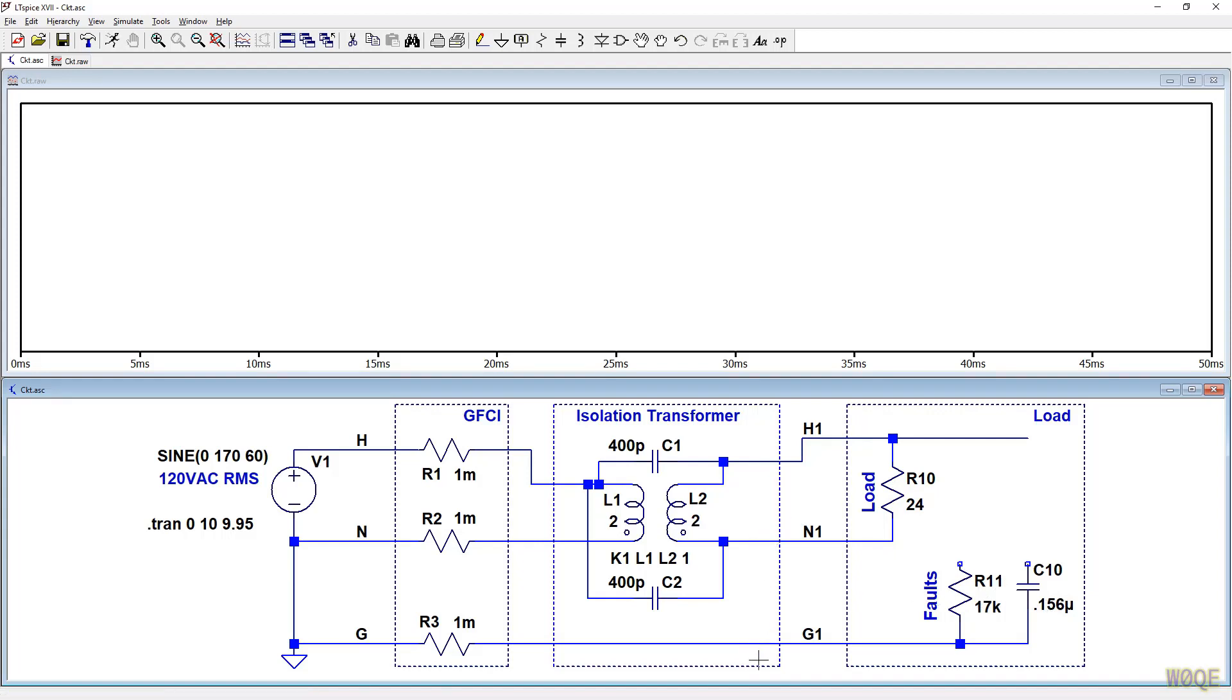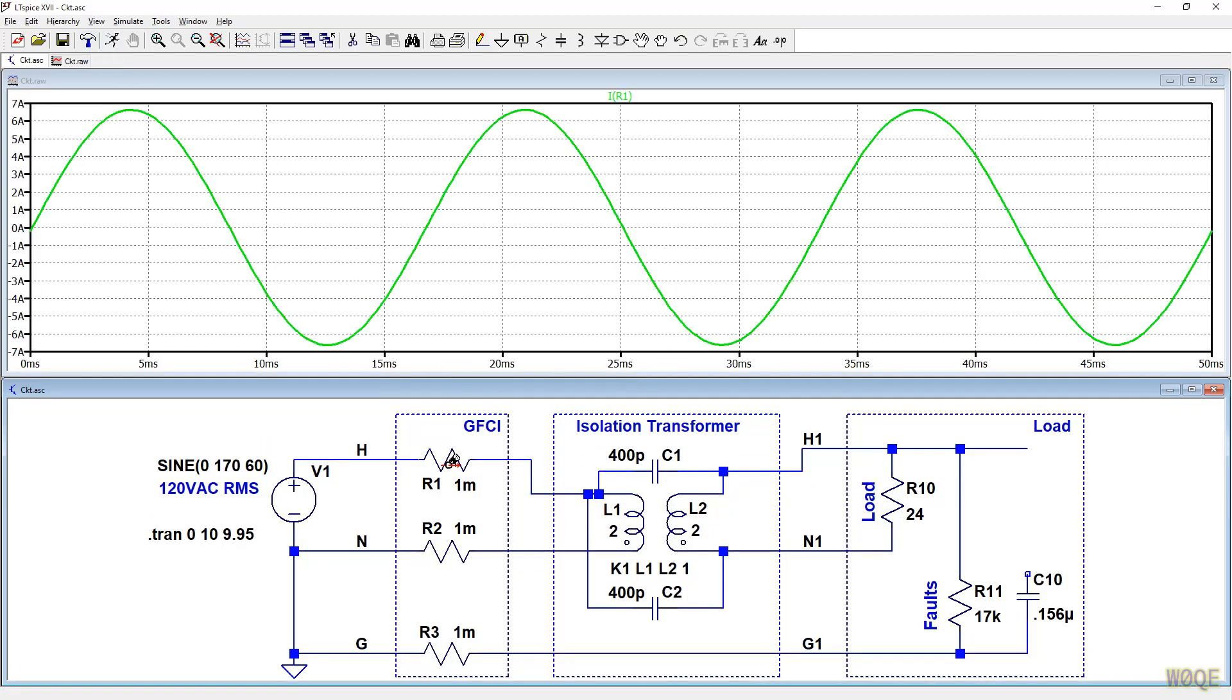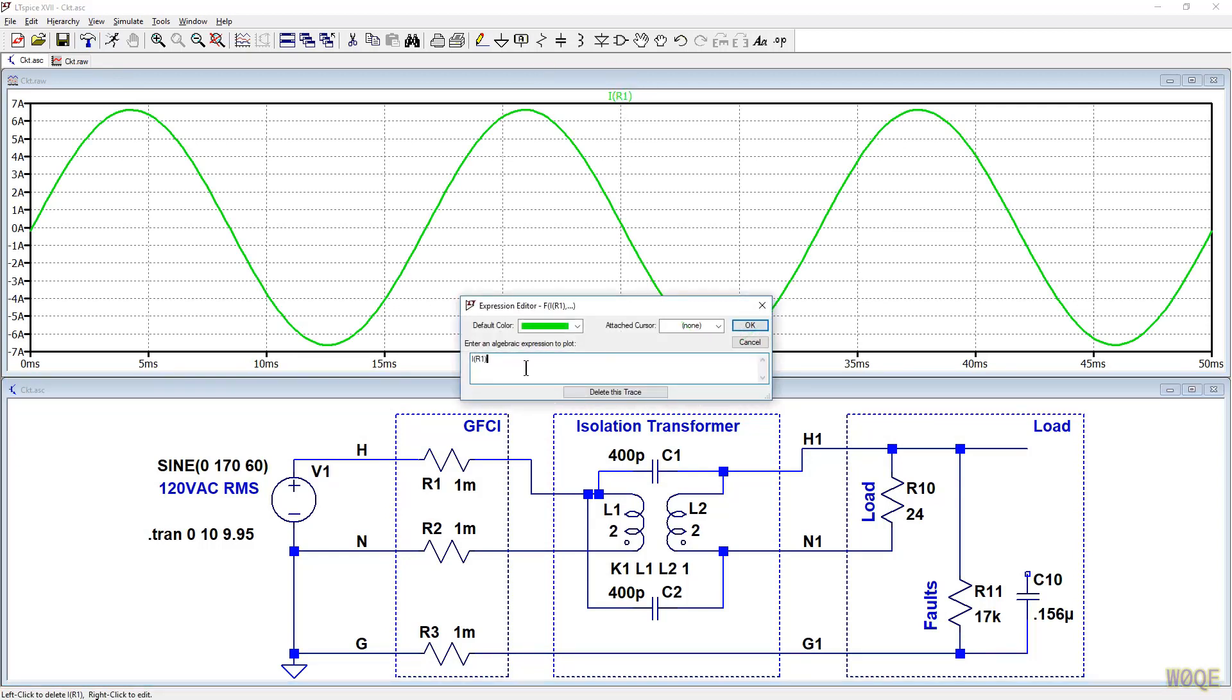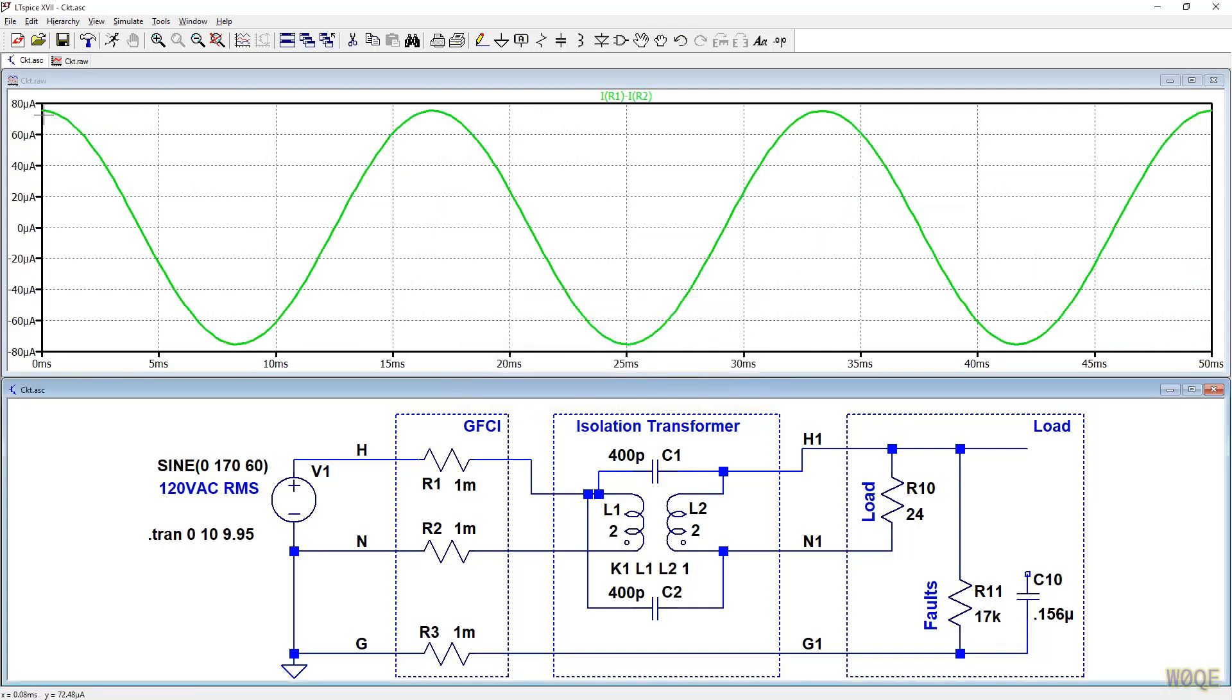And I've got a 24 ohm load like I had before it will draw five amps and I've got these two fault conditions. I do not have a connection from here to ground at the moment. Let's just leave this as an isolation transformer. If I had a fault here I wouldn't be able to see it. This point would just move right down to ground, very little current would flow here and what we would see here wouldn't be enough to trip the GFCI. Let's run this circuit and subtract the two currents and what I see is an 80 microamp peak current that flows here well below four or five milliamps that would trip the GFCI and that's with a current here flowing that would have been 10 milliamps peak.